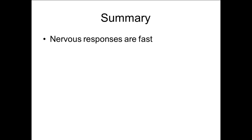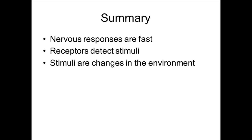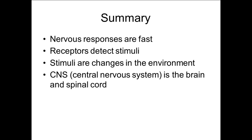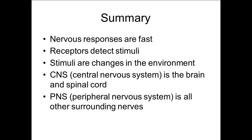To summarise, nervous responses are fast acting so they provide very, very quick responses to changes in the environment. Receptors are things that detect a stimulus, and a stimulus or stimuli is a change in the environment. Your central nervous system is your brain and your spinal cord, and your peripheral nervous system is all of the other surrounding nerves. Next time I will go into more detail about the different types of nerves in the system and things like the reflex arc.